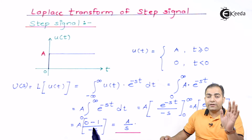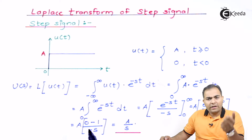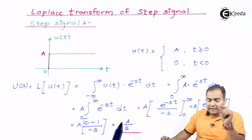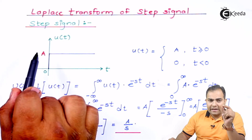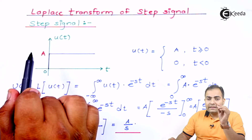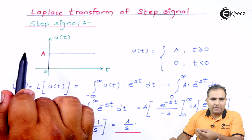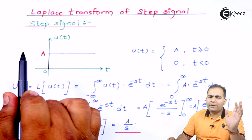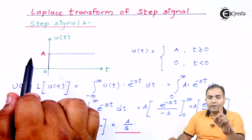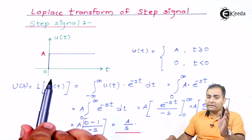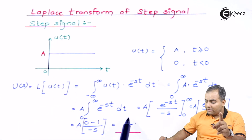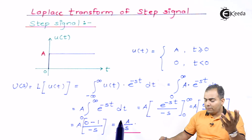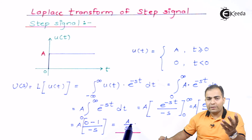We can ignore the zero, leaving minus one over minus s. The negatives cancel, giving one over s. Multiplying by A gives A over s — this is the result for the step signal. Now, the difference between a step signal and a unit step signal: if the amplitude A equals one, then the step signal is called a unit step signal. If A is not equal to one, it is simply a step signal with a different amplitude.